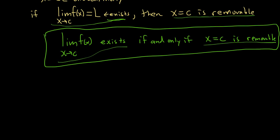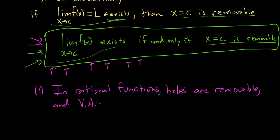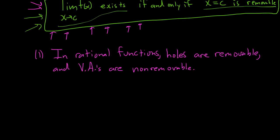For all practical purposes, let me give you two general rules that help with most problems. First, in rational functions — polynomial over polynomial — holes are removable, and vertical asymptotes (VAs) are non-removable. We typically use the limit criteria when we have a piecewise or absolute value function in harder problems, but most of the time these two rules cover it.